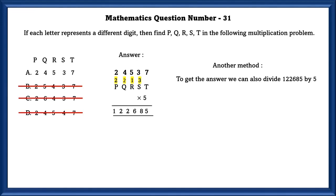We can also do another method. To get the answer, we can also divide 122,685 by 5, which is the easier method if there are no blank spaces in the product. The answer is A.